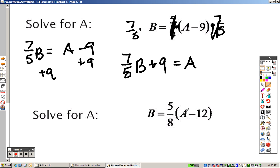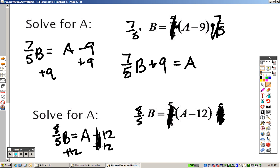Same idea down here. To get A by itself, this is multiplication even though it's a fraction. So I multiply by the reciprocal on both sides. So we end up getting 8 over 5B equals, those cancel out, A minus 12. So it's addition because I have to get A by itself. So 8 over 5B plus 12 equals A, and there's your answer for that one.